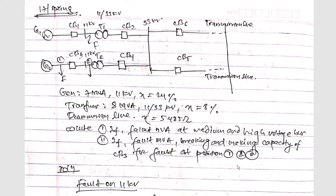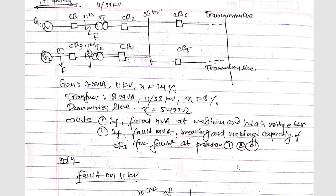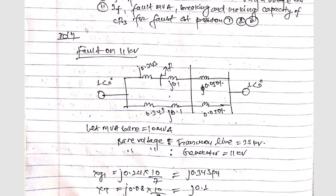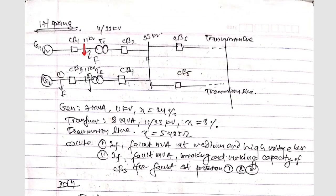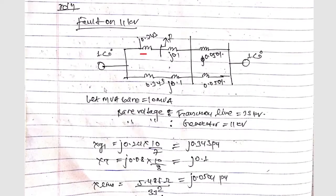Let's start the solution. First we'll consider the fault at 11 kV, meaning the fault at this point. Our reactance diagram will look like this — here you can see circuit breakers, one transformer placed here, similarly a second generator and another transformer placed here. This is for generator G1, generator G2, transformer 1, transformer 2, and the transmission lines: transmission line 1 and transmission line 2.